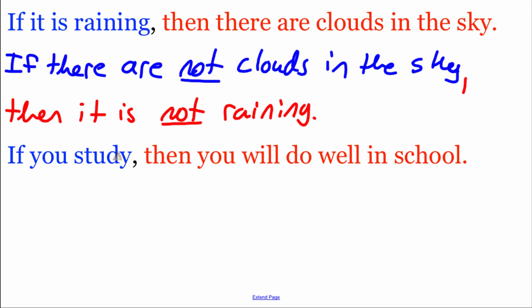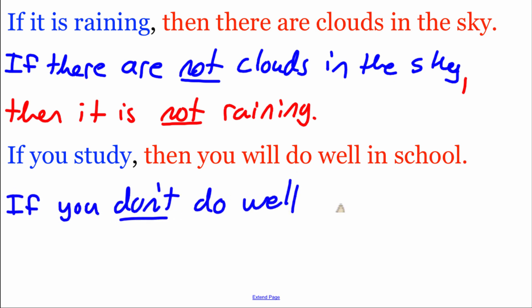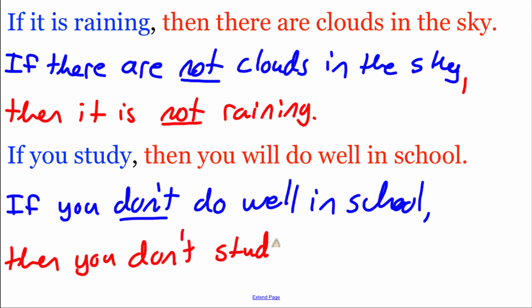Our last one: 'If you study, then you will do well in school.' Again, we do the converse — flip the if-and-then around — and then negate it. So: 'If you don't do well in school, then you don't study.' There's our contrapositive — we flipped the if-and-then around and negated it. That's going to be it for this video. Thanks for watching.